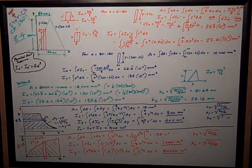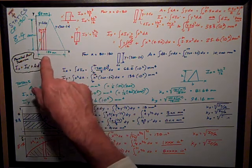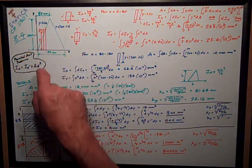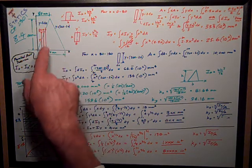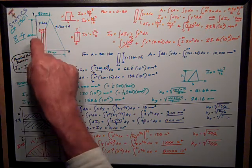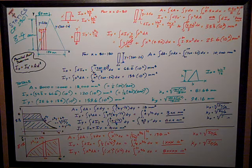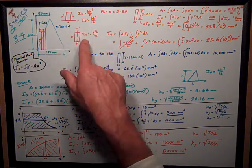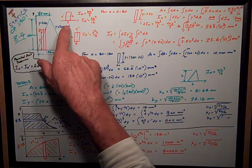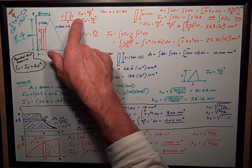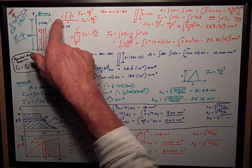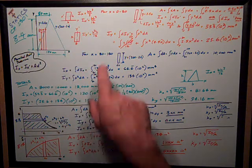Whenever we have an area bounded by an axis, we want to generally take a little strip element, dA, of dimensions. In this case, because it's bounded by the x-axis, its dimension is dx, and its height is y. I'm going to use the equation for the moment of inertia about axis x of a rectangle of width b and height h: Ix = bh³/3. The moment of inertia about the centroidal axis x-prime is bh³/12.